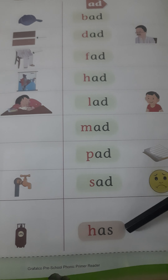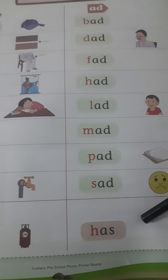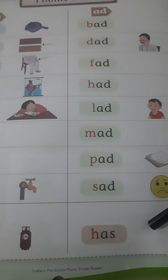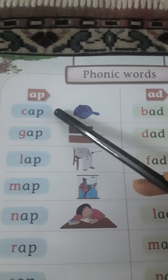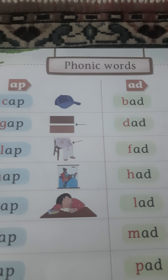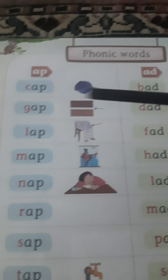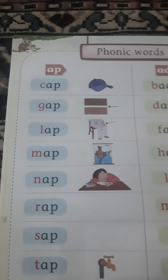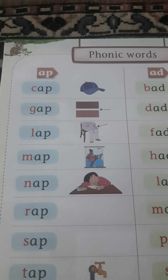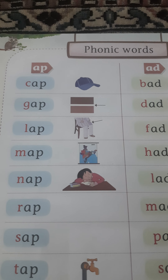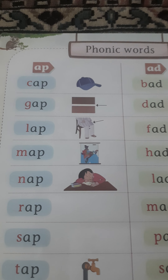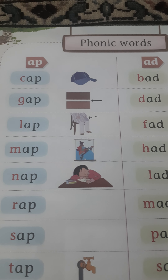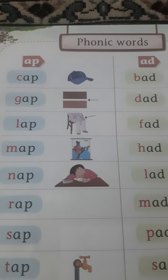Has. You got this! This is add, and agar hama in ke aage nye letters laga rahe hain, toh nye words ban rahe hain. For this, you have to make clear all the phonic sounds — phonic sounds of all the 26 letters. Happy learning!